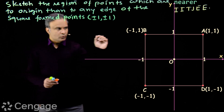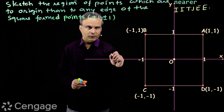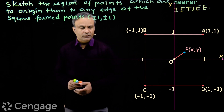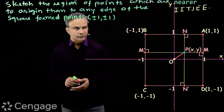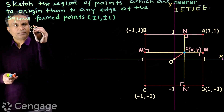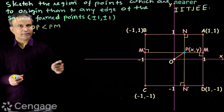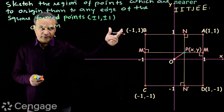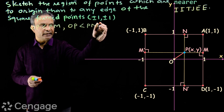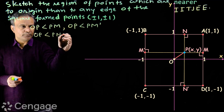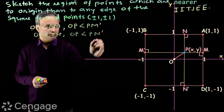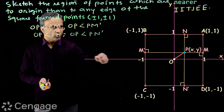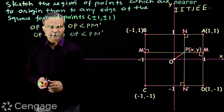Now we discuss the region of points which are nearer to origin than to any edge of this square. Consider a point P with coordinates (x, y). Join point P with the origin, then from point P draw perpendiculars to all the edges. According to the condition, we must have OP less than PM, where M, M', N, and N' are the feet of perpendiculars from P upon the edges of the square.